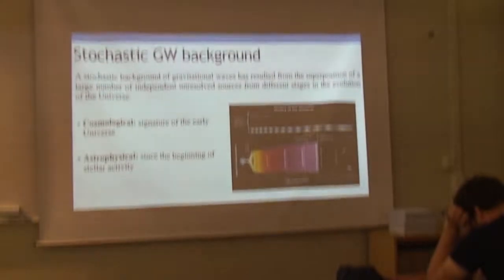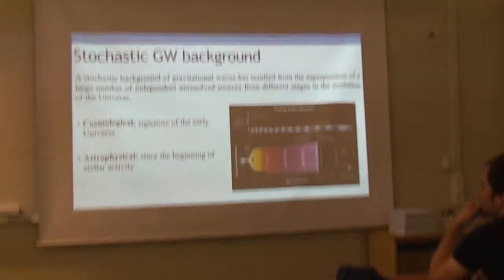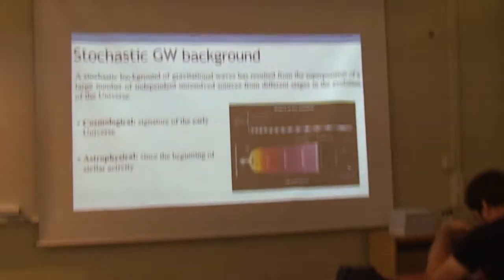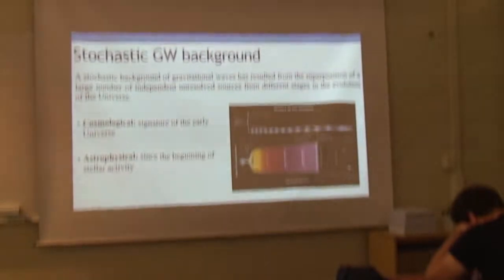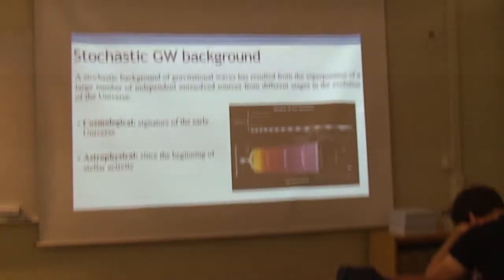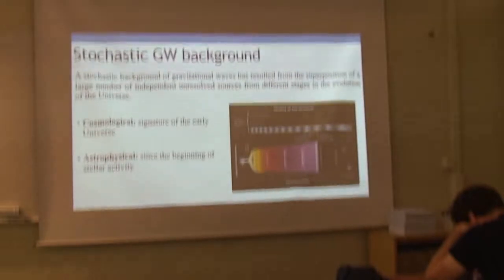So what is the gravitational wave stochastic background? The way we define it in any paper is that it's the superposition of many unresolved sources — sources you cannot detect individually. 'Unresolved' means two different things. The first definition is that there are so many sources overlapping at the same time that even in a perfect detector with perfect sensitivity, you will never be able to separate them and detect them individually.